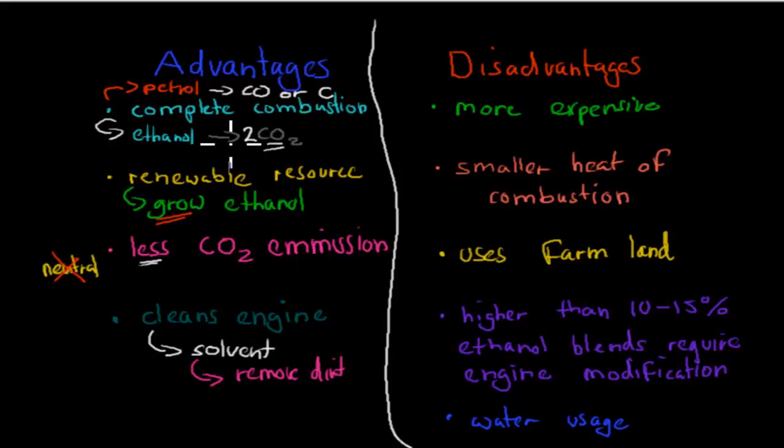Complete combustion, which means all the ethanol is turned into carbon dioxide, none of it is turned into carbon monoxide or carbon soot, such as the case with petrol. It's a renewable resource, which means we can grow it, and we can make more and more of it in the future, unlike fossil fuels, which will run out eventually. Also produces less CO2 emission than petrol, and it also cleans the engine because it's a solvent, which means it can remove dirt from our engine. These were the advantages.